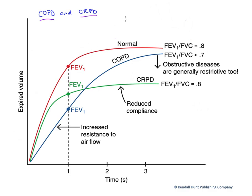If we take a normal person without pulmonary disease, shown here in the red line, and we have them breathe into a spirometer, here's their tidal volume. Then if we have them breathe in maximally and then exhale maximally as fast as they possibly can, and then they could go back to tidal breathing. We're going to grab from where they fully inhaled, utilizing their inspiratory reserve, to where they fully exhaled over three seconds and utilized their expiratory reserve.